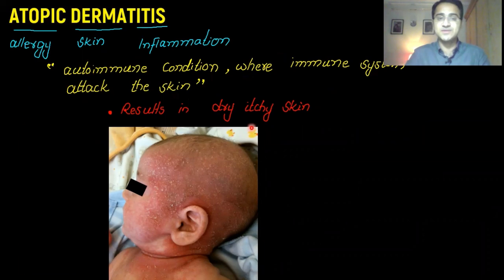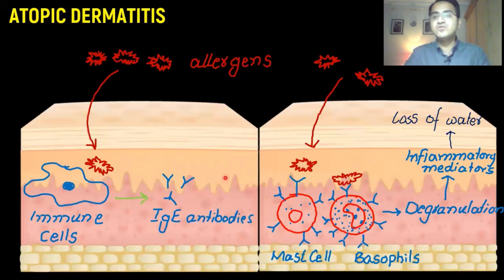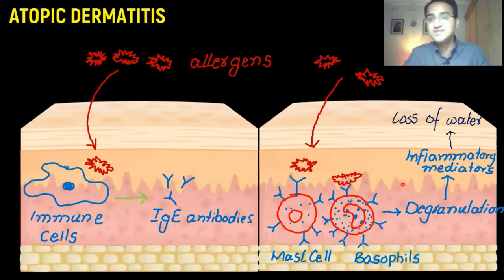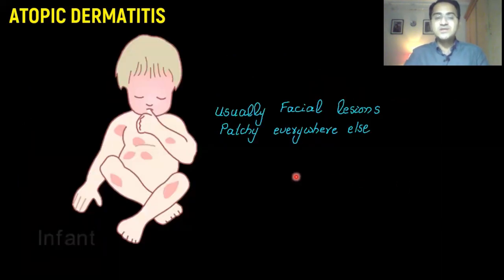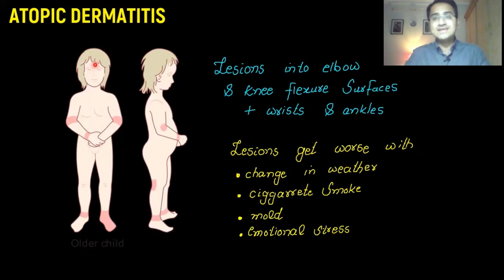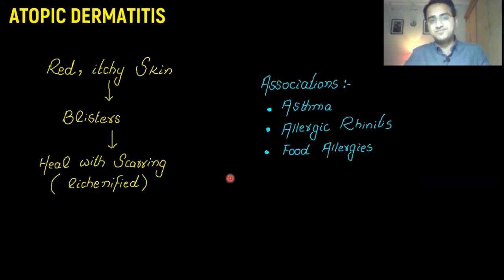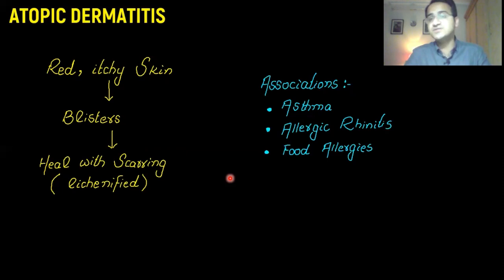In summary, atopic dermatitis is an allergic reaction affecting the skin that results in dry itchy skin. Allergens enter the skin, are taken up by the immune system, IgE is secreted, binds to the allergen on re-exposure, and degranulates mast cells and basophils, releasing inflammatory mediators. In infants, it is usually present on the face and scalp; in older children, on the flexor surfaces of the elbows and knees. It starts as a red itchy rash and heals with scarring.